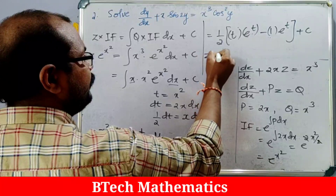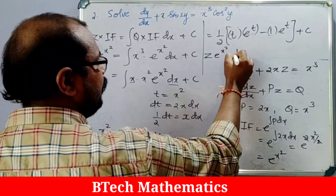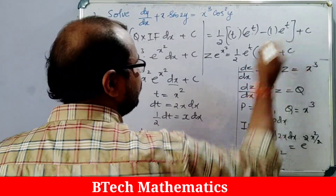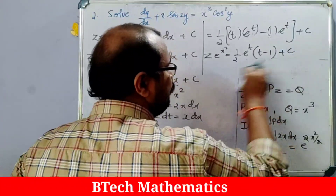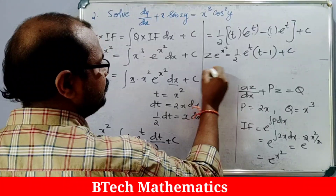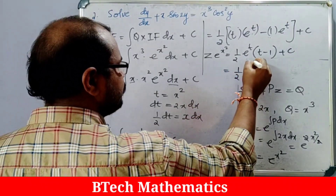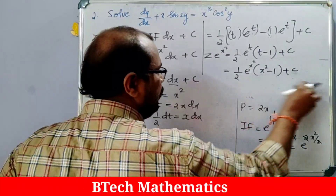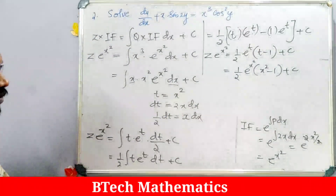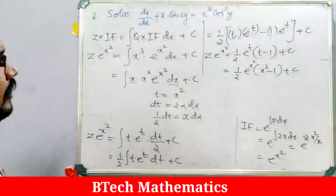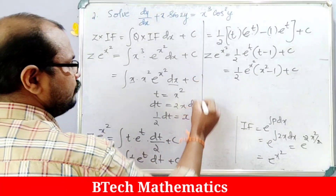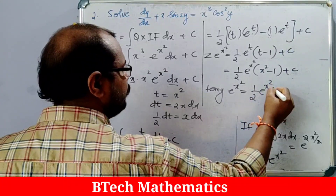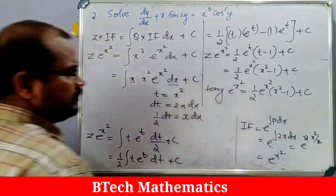Substituting back t = x²: z·e^(x²) = (1/2)·e^(x²)·(x²-1) + C. Since z = tany, the answer is: tany·e^(x²) = (1/2)·e^(x²)·(x²-1) + C.